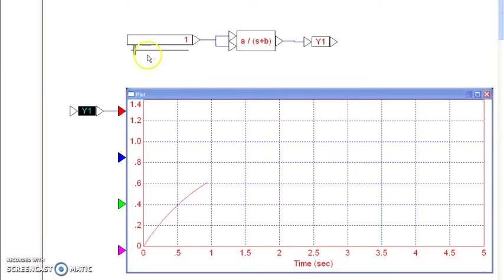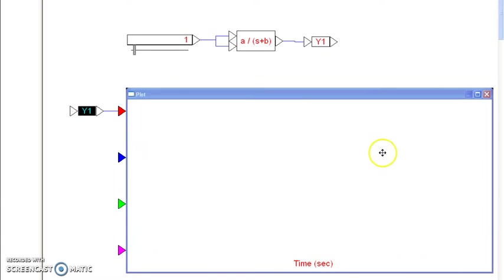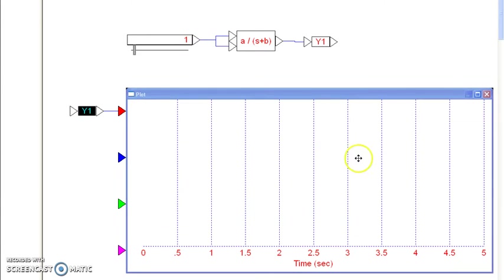B, which is this number here, affects the step response. As B gets bigger, the system gets quicker and quicker. The settling time is a way to approximate the real part of the dominant pole. e to the minus 4 is 0.02, so the settling time is roughly 4 over the real part of the pole.